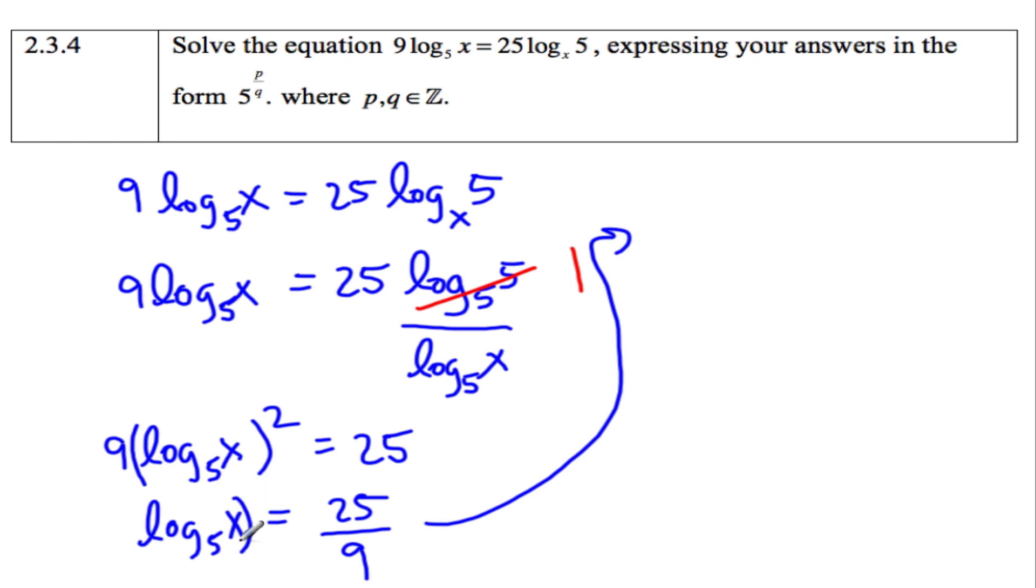And then we have, whoops, squared. Now I'm going to square root, so log₅(x) = ±5/3.